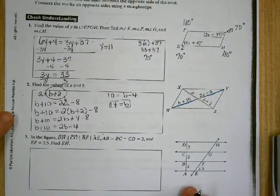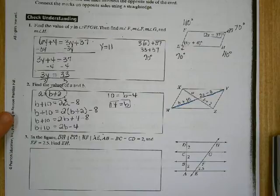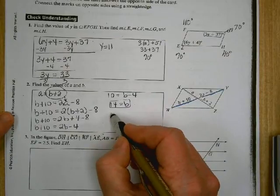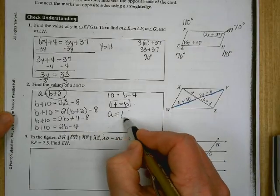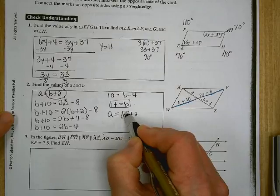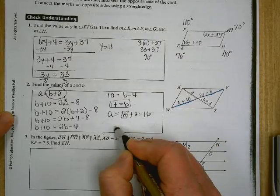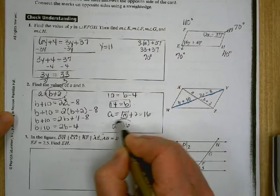If B is equal to 14, what's A equal to? 14 plus 2, which is 16. So A is 16 and B is 14.